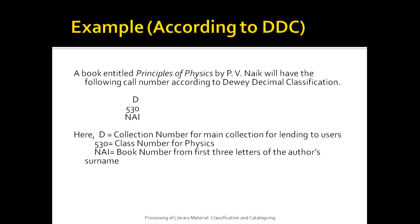Let us take a look at an example according to Dewey Decimal Classification. A book entitled Principles of Physics by author P.V. Naik will have the following call number: D 530 NAI. Here D stands for collection number for the main collection for users; 530 is the class number for the subject physics; and NAI is the book number from the first three letters of the author's surname Naik. In many cases, the book number could also be according to the year of publication.